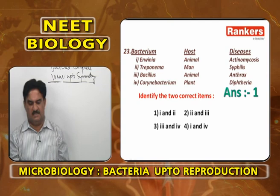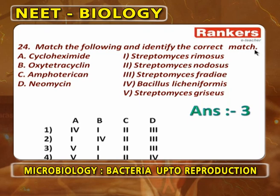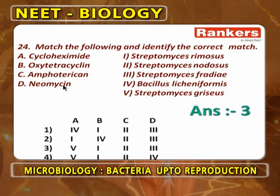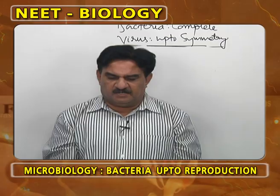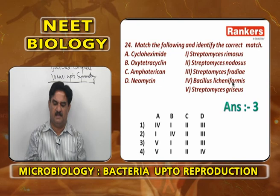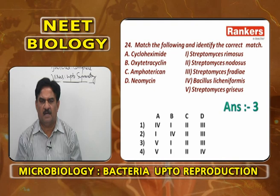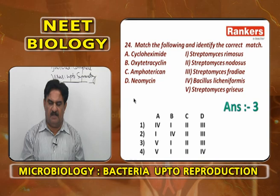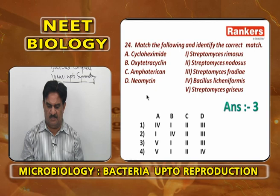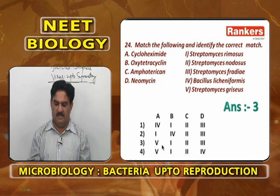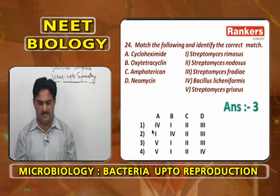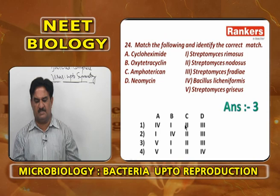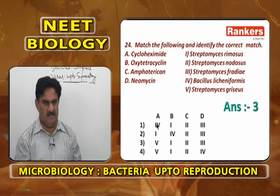Antibiotics from bacteria: Cyclohexamide is from Streptomyces griseus. Oxytetracycline is from Streptomyces rimosus. Amphotericin is from Streptomyces nodosus. Neomycin is from Streptomyces fradiae. So the correct matching is: Cyclohexamide-Streptomyces griseus, Oxytetracycline-Streptomyces rimosus, Amphotericin-Streptomyces nodosus, Neomycin-Streptomyces fradiae — answer A4, B1, C2, D3.